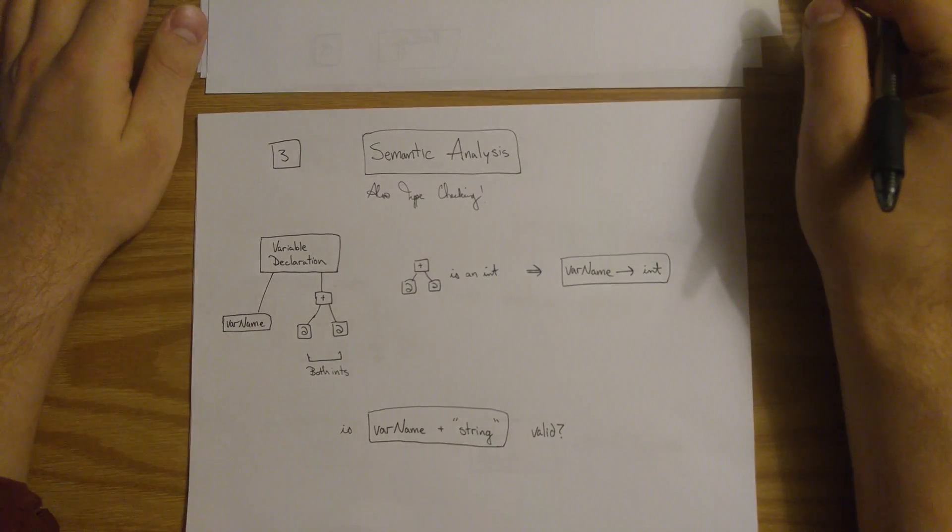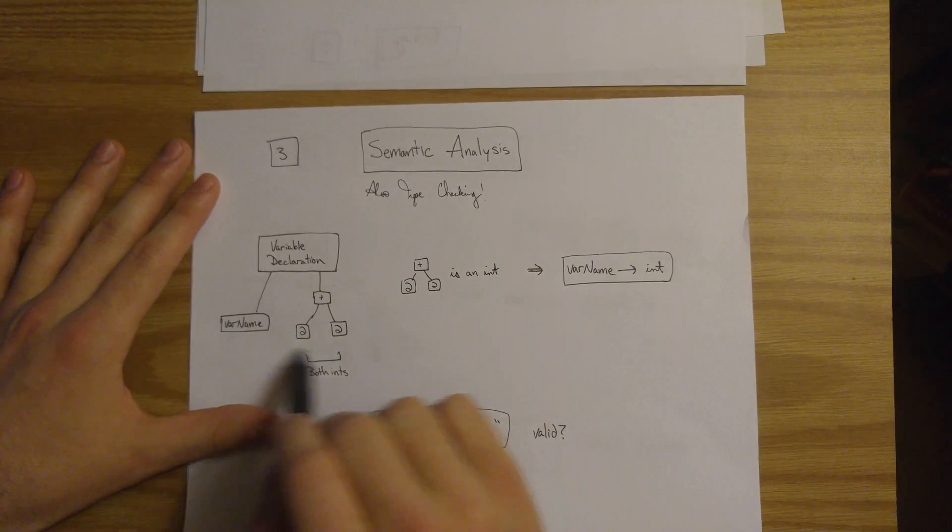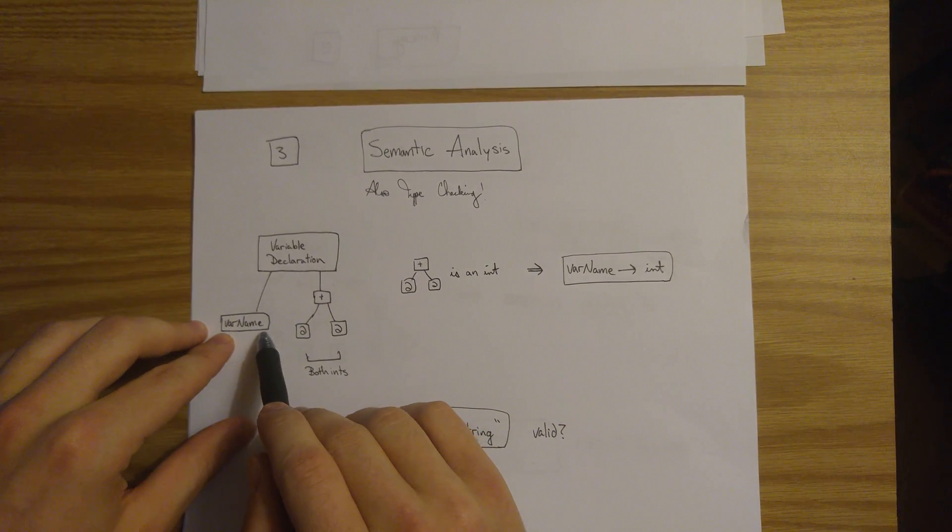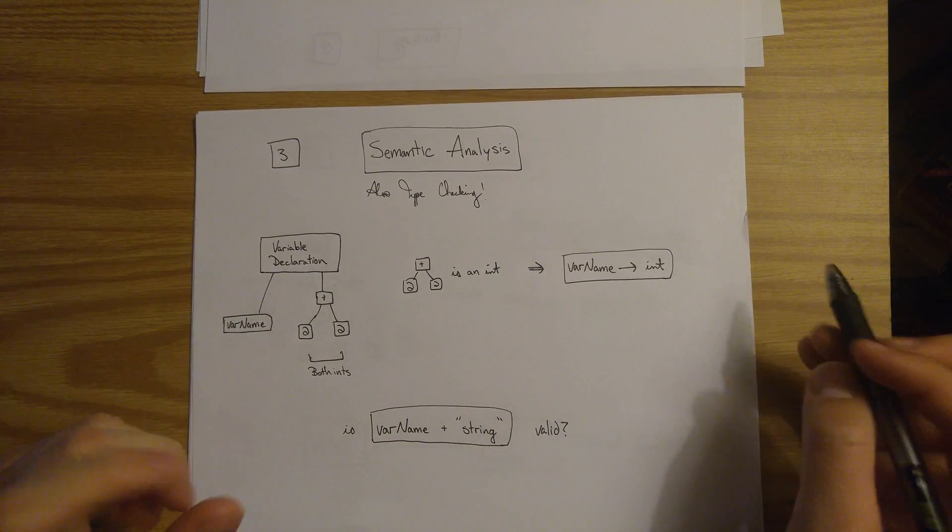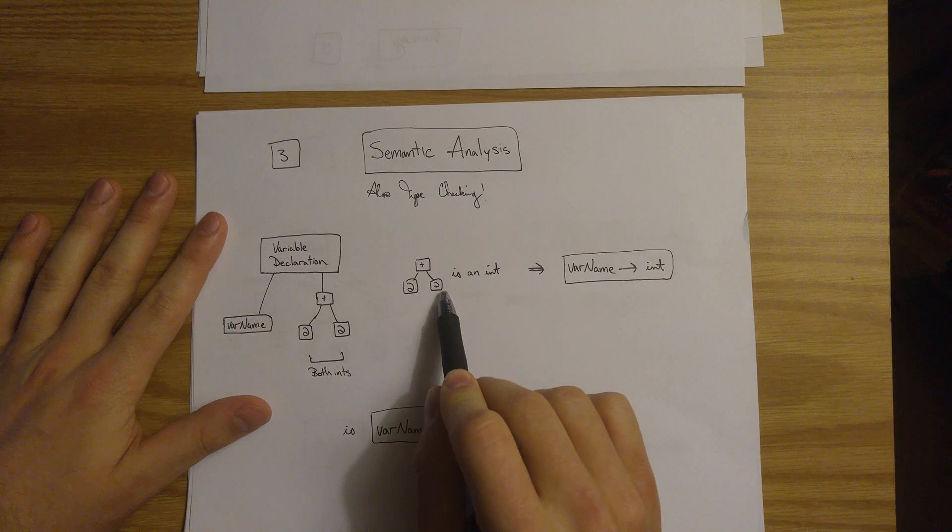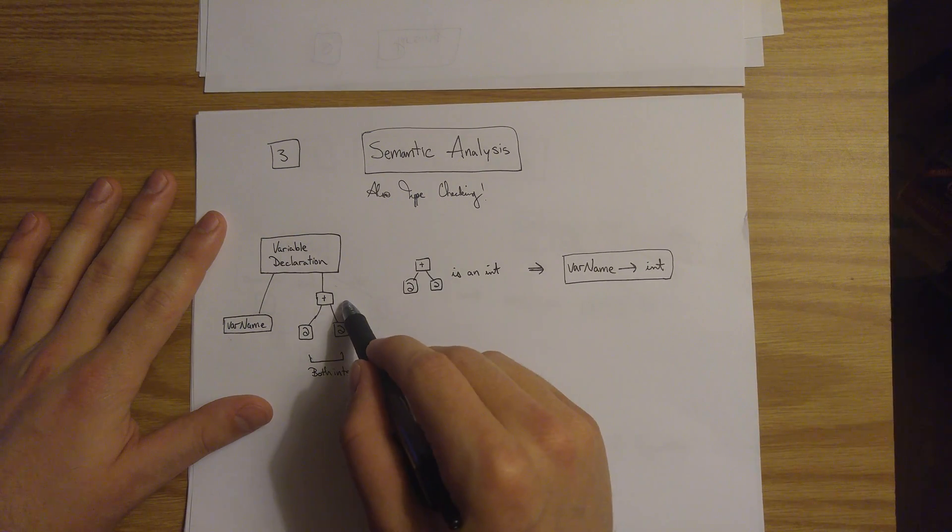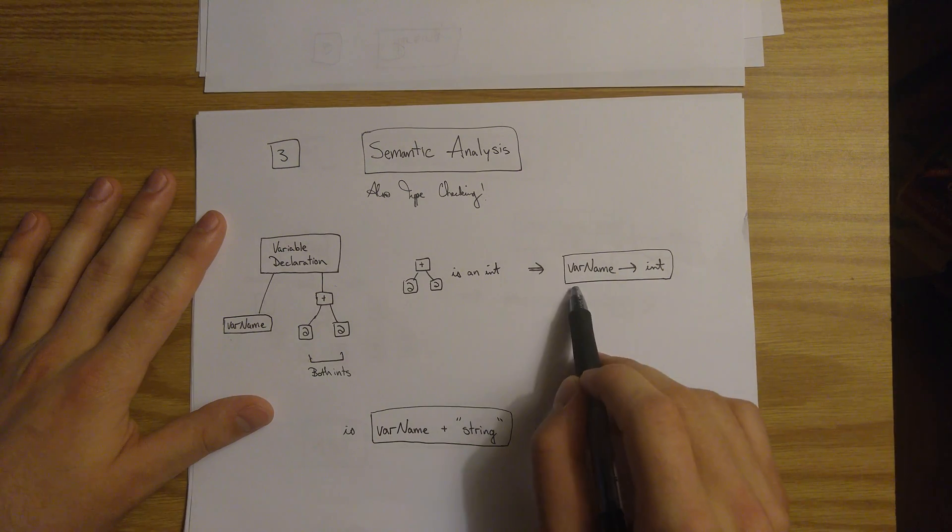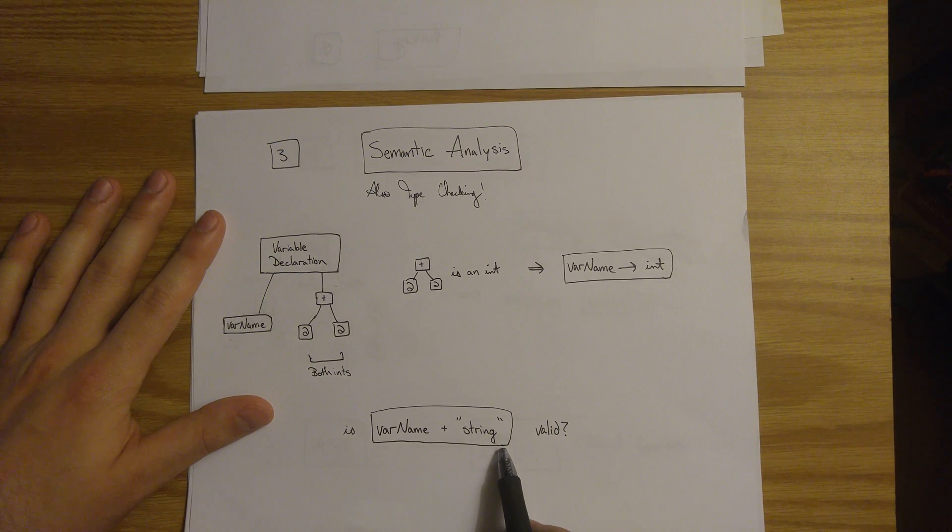The next stage is called semantic analysis. In semantic analysis, we want to check our abstract syntax tree to make sure and figure out what types our various variables have, and every time that they're used, if their types are consistent. So here, because 2 is an integer and 2 is an integer, adding them together must create an integer. And because we're assigning that value to var name, we can conclude that var name is of type integer. So therefore, later on in the program, we cannot add it to a string.